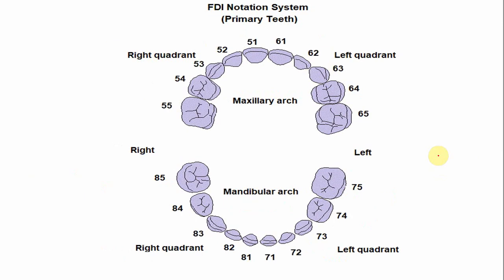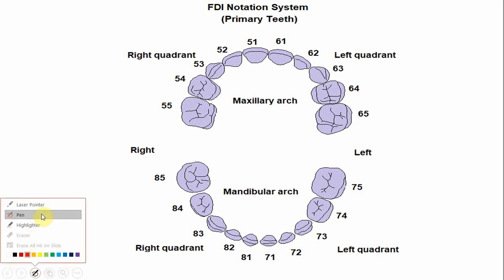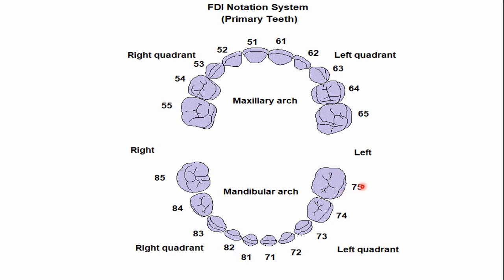In the FDI notation system, also known as the two-digit system, the number of this tooth for the left mandibular second molar is 75, and for the right it is 85. Here, 7 means the tooth is of the mandibular left quadrant, while 8 means the tooth is of the mandibular right quadrant, and 5 indicates the tooth number. So the number is 75 for the left mandibular second molar and 85 for the right mandibular second molar.